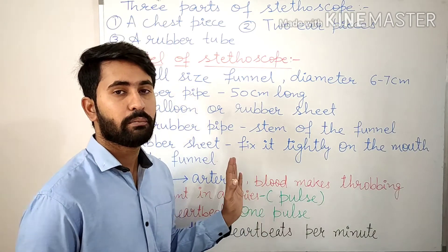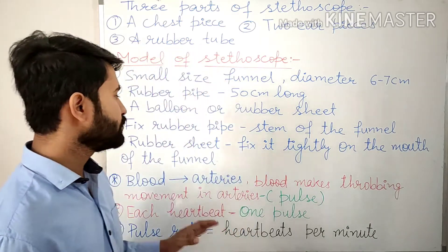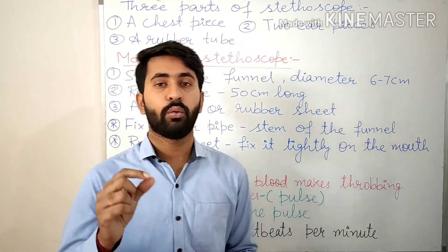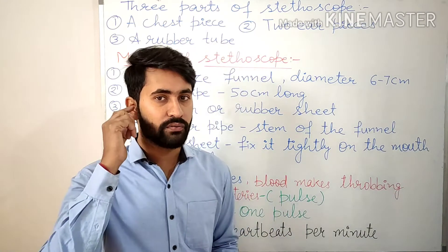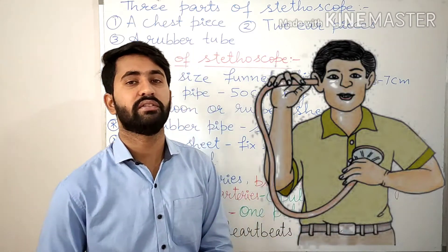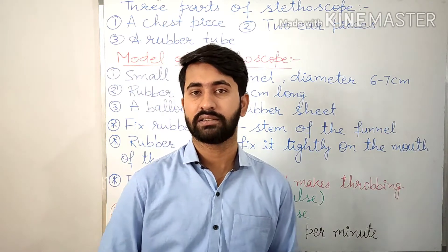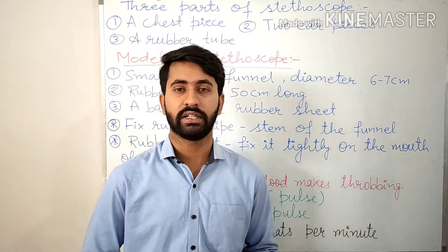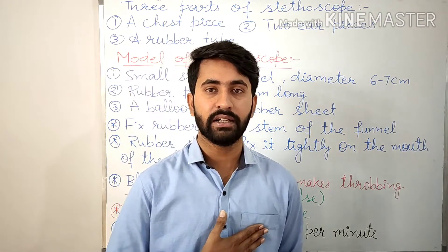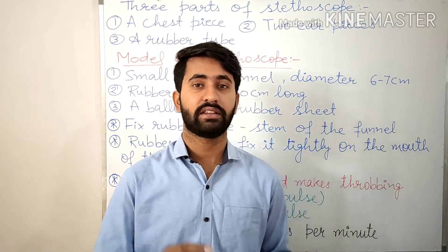The balloon or rubber sheet should remain tight. Now our stethoscope is ready. We will put the open end of the rubber tube in one of our ears and place the mouth of the funnel on our chest just above the heart. When we keep the mouth of the funnel on our chest just above the heart, we will hear regular thumping sounds like dhug dhug dhug dhug.